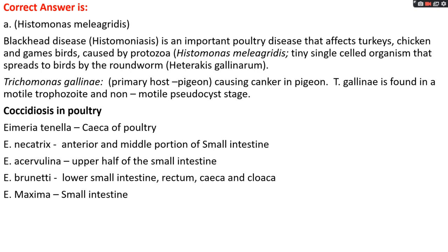Trichomonas gallinae primarily affects pigeons and mainly causes canker. It is found in two forms: motile feeding form (trophozoite) and non-motile pseudocyst form. Coccidiosis in poultry is caused by Eimeria species, while Isospora species mainly cause coccidiosis in dogs. According to species, the infected site in poultry varies: Eimeria tenella mainly infects the cecae; Eimeria necatrix mainly affects the anterior and middle portion of small intestine; Eimeria acervulina mainly affects the upper half of the small intestine; Eimeria brunetti mainly affects lower small intestine, rectum, cecae and cloaca; Eimeria maxima affects the small intestine.